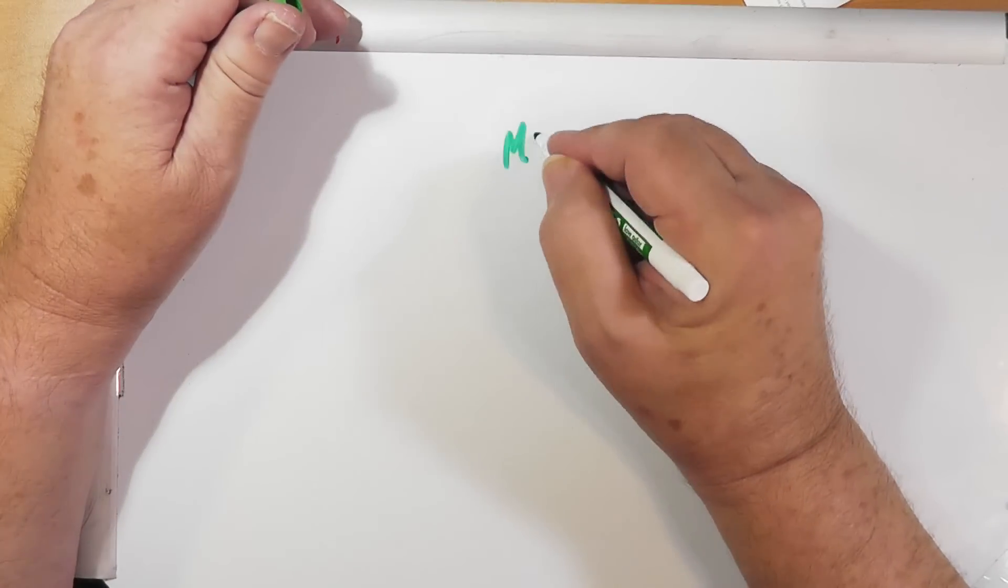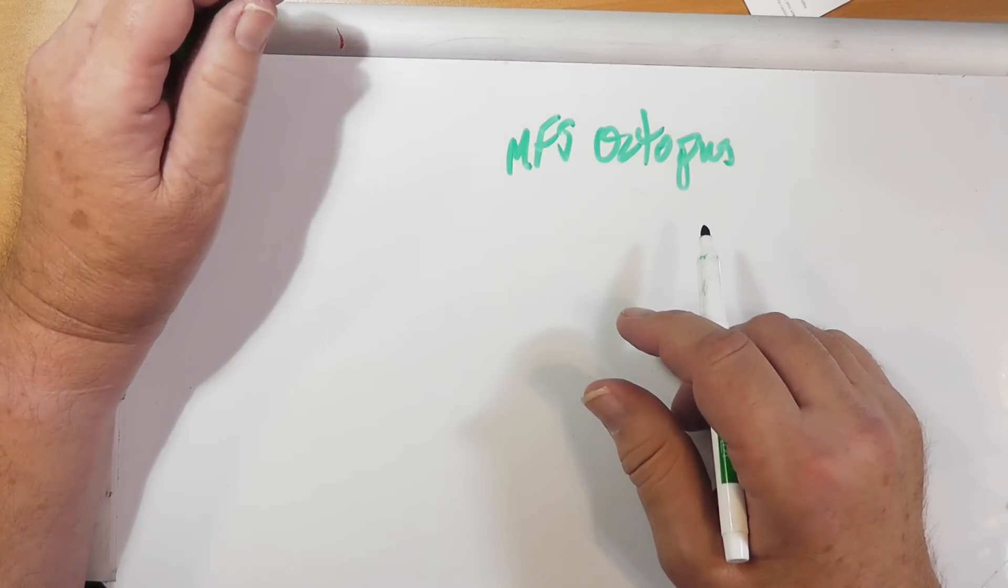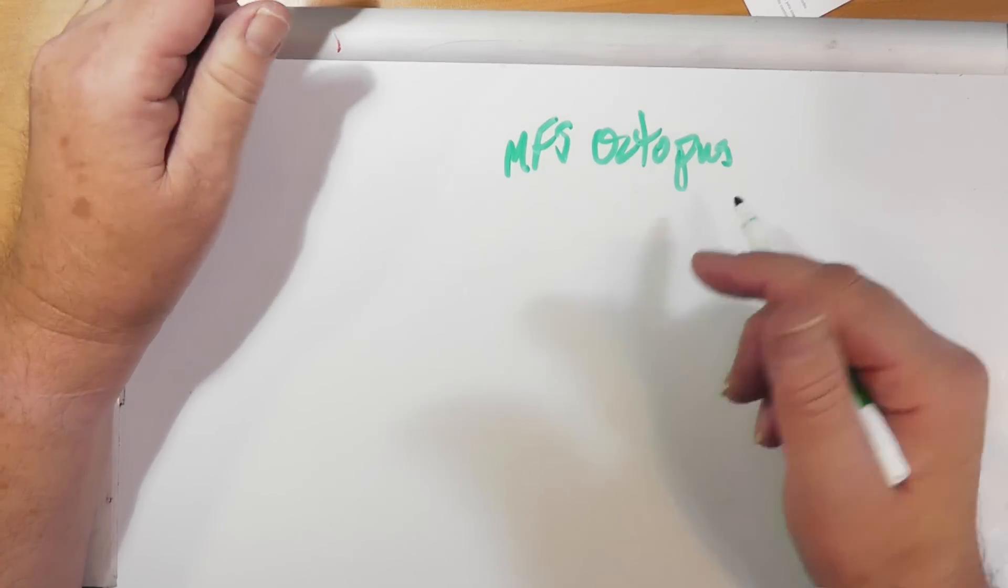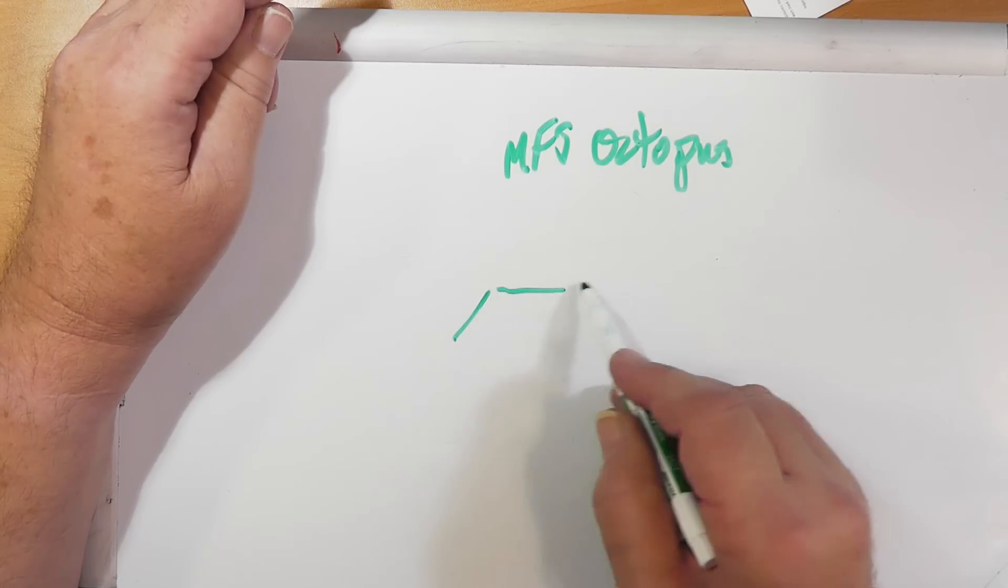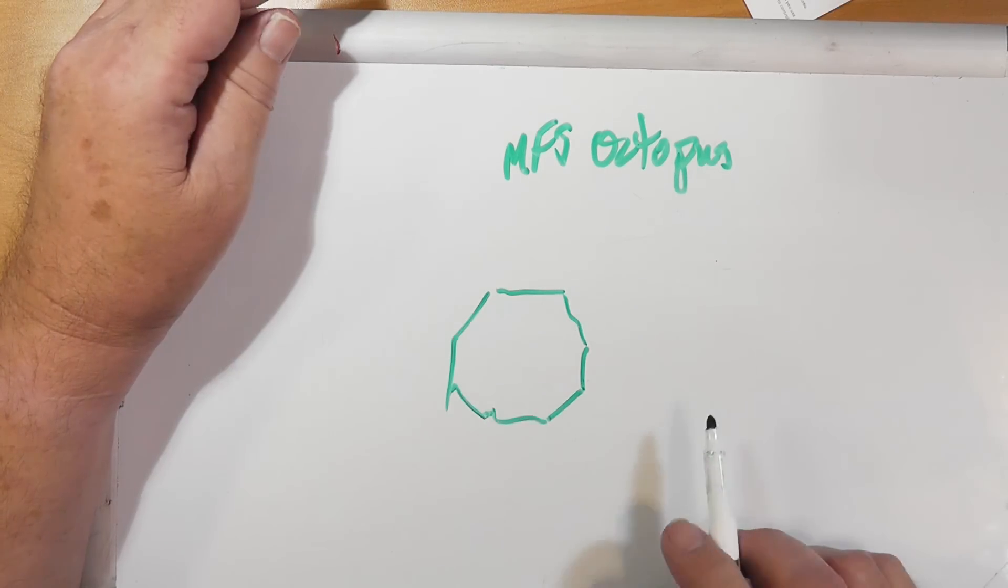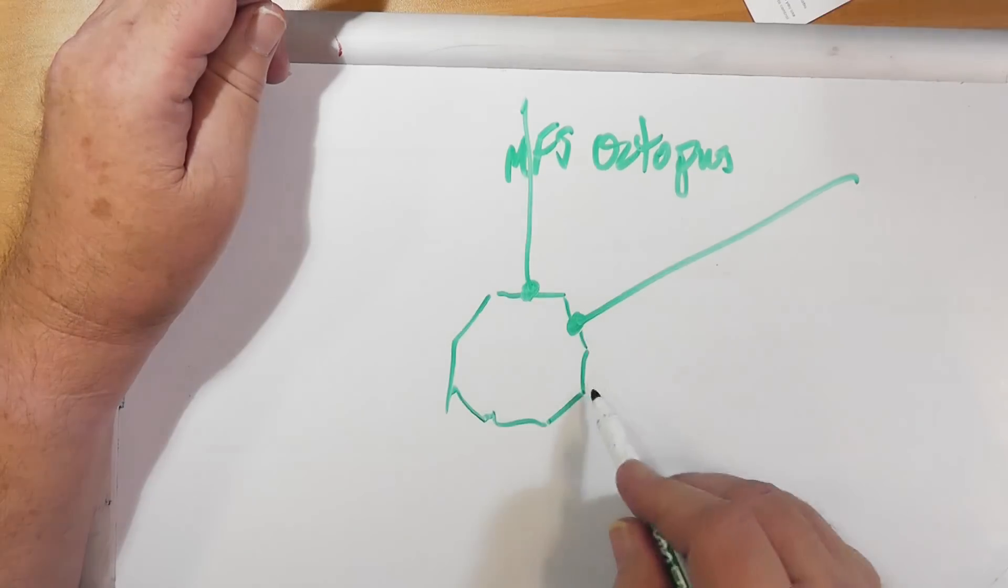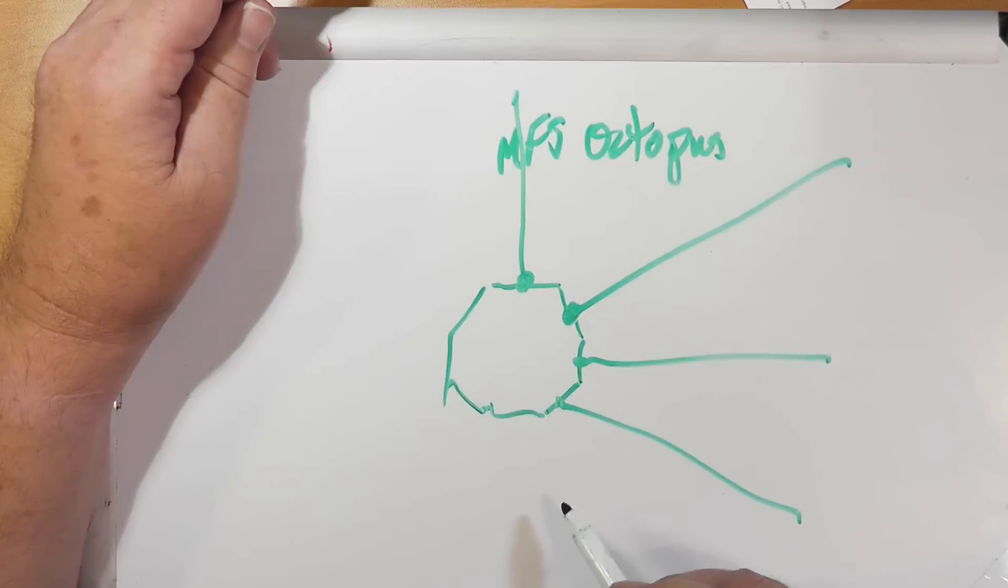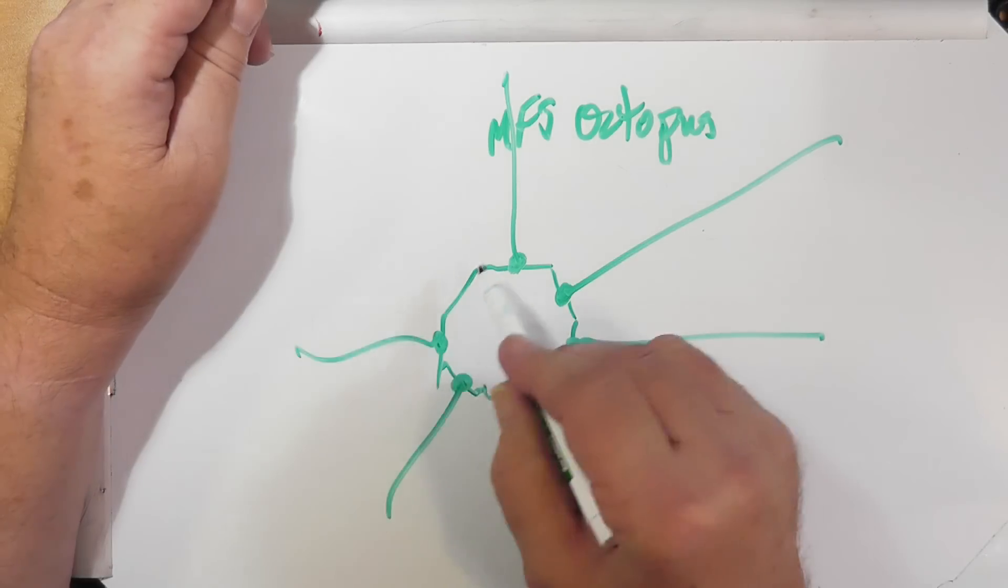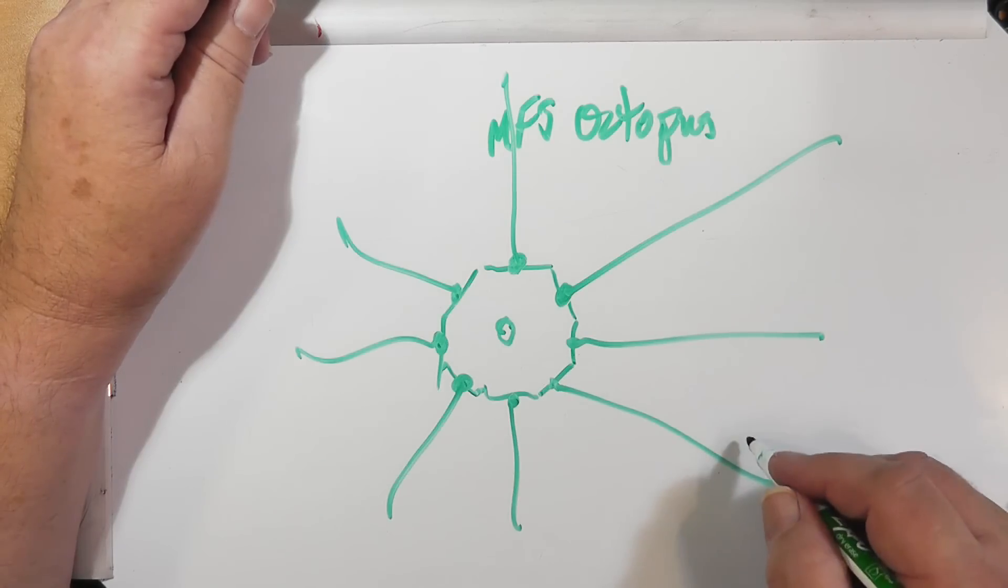The MFJ octopus, which is electrically the same as the chameleon spider hubs. You have a hub with several sides here, and you have out of each one of these a hamstick. You can get this from MFJ or chameleon antennas and they're basically a hybrid between this holder and they go on a pole.